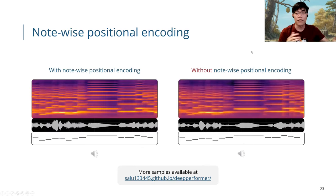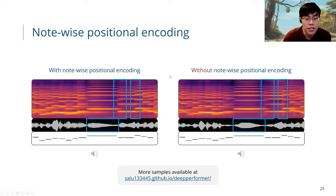We have an ablation study to see how effective is the note-wise positional encoding. As we can observe in this comparison, we can see clear much better pitch contour when we enable note-wise positional encoding. And the note boundaries between the two adjacent notes are clearer when we enable note-wise positional encoding.